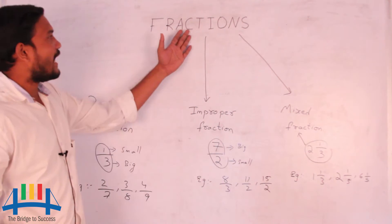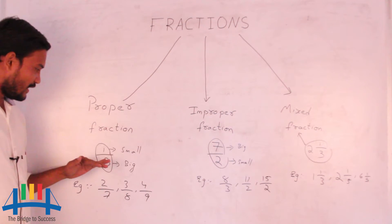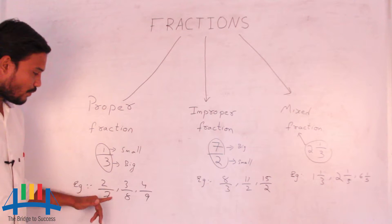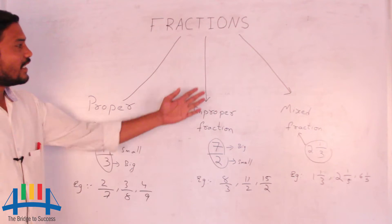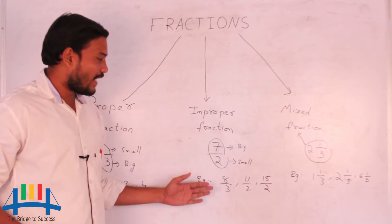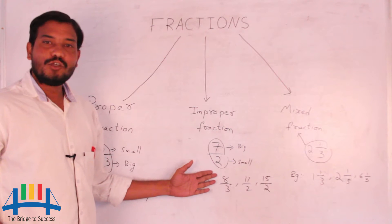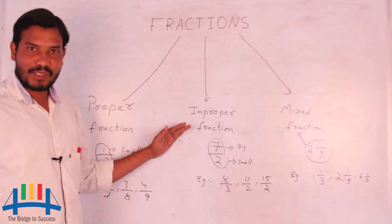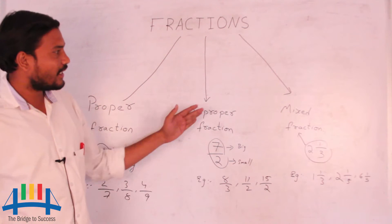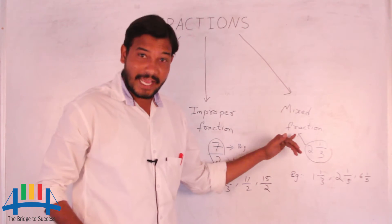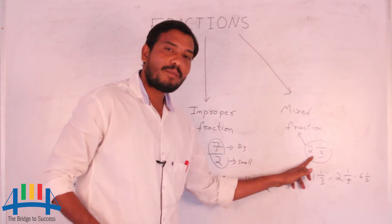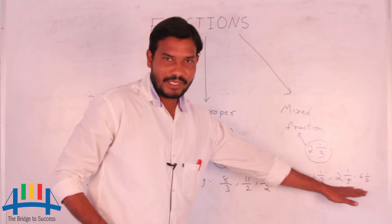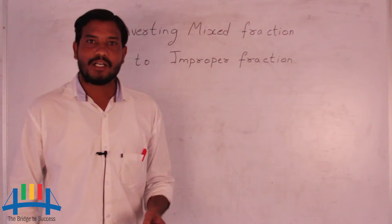So fractions are divided into three types: proper fraction, improper fraction, and mixed fraction. In a proper fraction, examples are 2 by 7 and 3 by 8. In an improper fraction, the numerator is big and the denominator is small. A mixed fraction has one whole part and one fractional part.